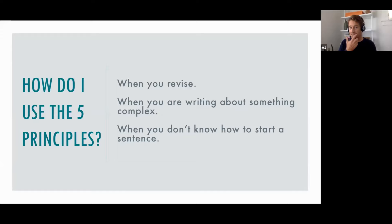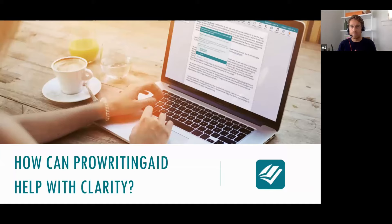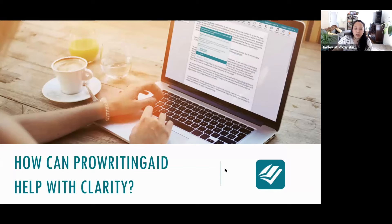That relates to principle five as well: when you don't know how to start a sentence, look at your previous sentence, grab an element from it, and build the next sentence with that element. Now I'm going to have Haley help out with how ProWritingAid can help with clarity.